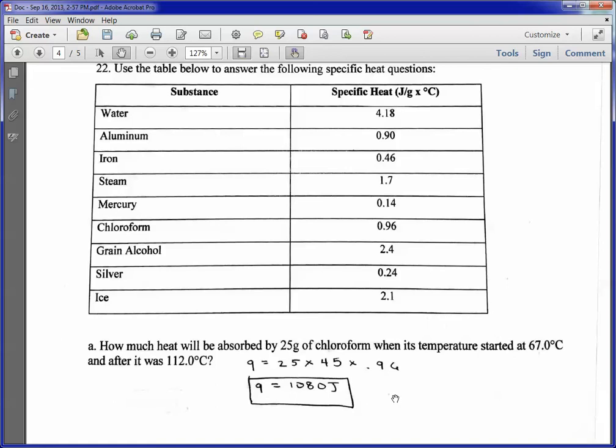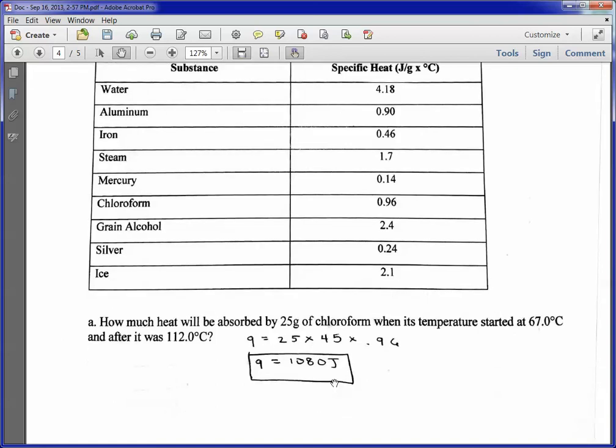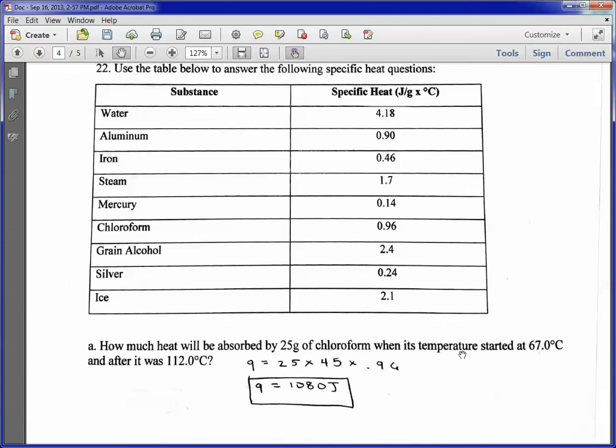For A, guys, I'm trying to solve for Q. I go through this in the problem. I'm sorry, it was quiet. Q equals MC delta T. M is 25. 45 is your change in temperature. So it ended, it's Tf minus Ti, so 112 minus 67. I'm really sorry. I messed up. It should be 45.0. Times, since I know this is chloroform, I get the C from here. It's 0.96. So once you calculate that, you multiply them out.